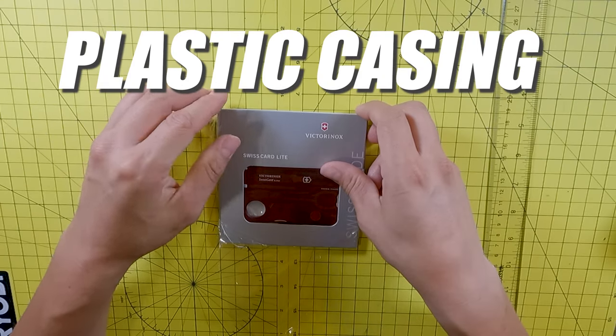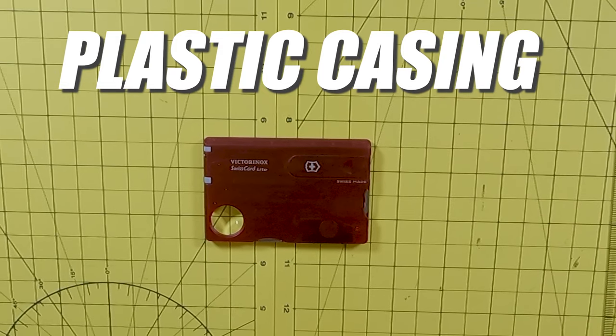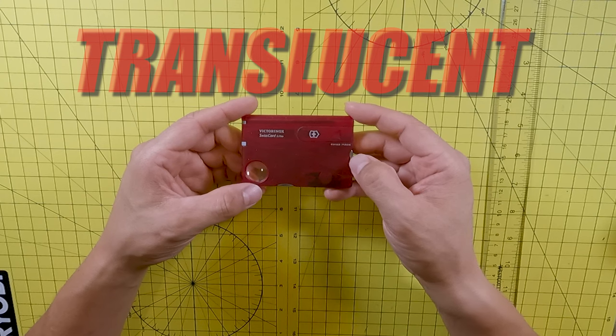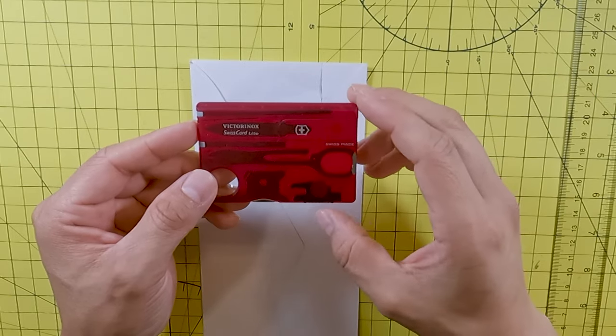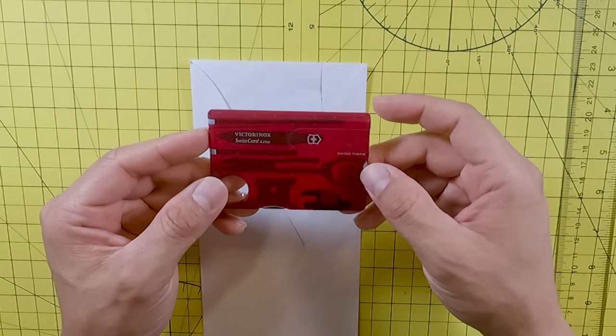We'll begin with the plastic casing in which the tools are stored. The casing on this card is translucent so this is helpful in a way that you're able to see what tools are inside the card. This way you know what tool you're about to pull out.